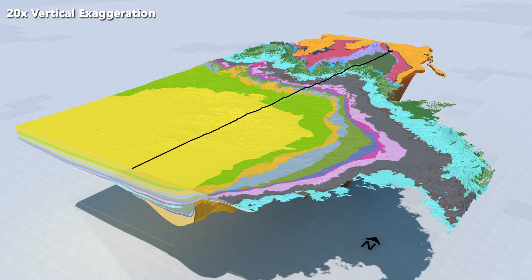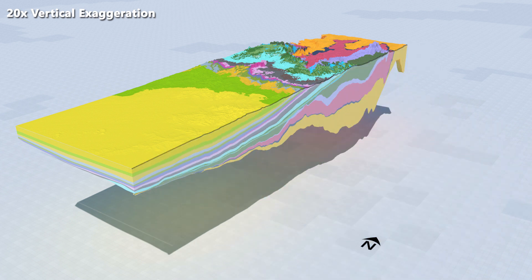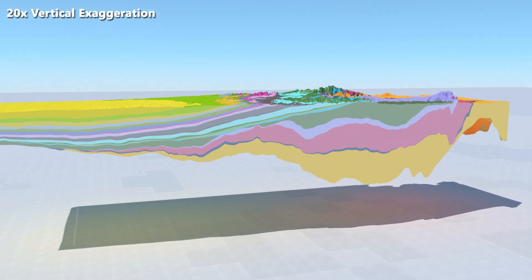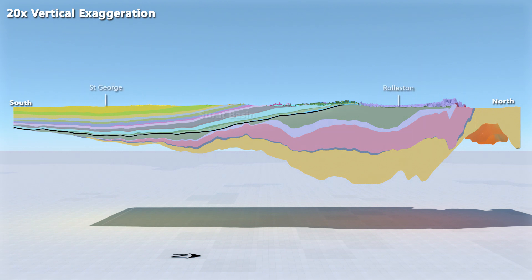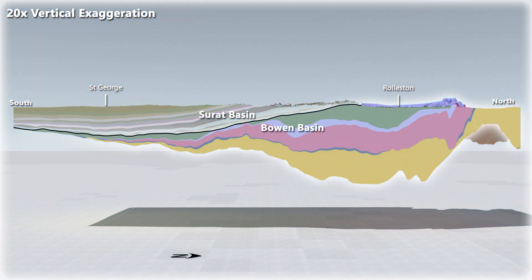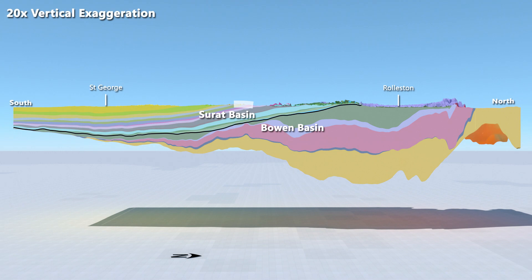Now you can see a north-south cross section of the Surratt and Bowen Basins. In the south, the Surratt Basin overlies the Bowen Basin, whilst to the north the younger sediments of the Surratt Basin thin and disappear. The older and deeper sediments eventually reach the surface until only the formations of the Bowen Basin are exposed.